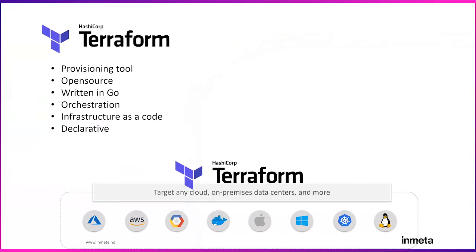Terraform itself is an open-source IaC tool by HashiCorp, written in the Go language. The Go code is compiled into a single binary, which is used to deploy infrastructure or build a server using just a shell. The Terraform binary makes API calls to Google Cloud, AWS, OpenStack, etc., thanks to Terraform providers maintained by the community.